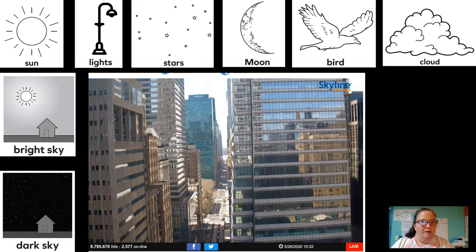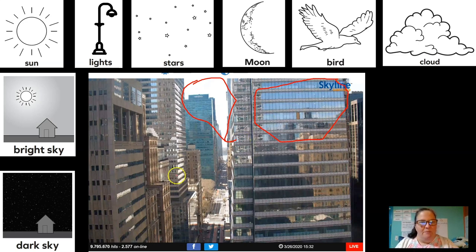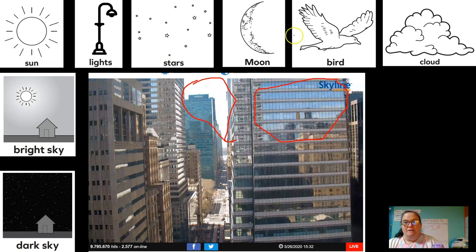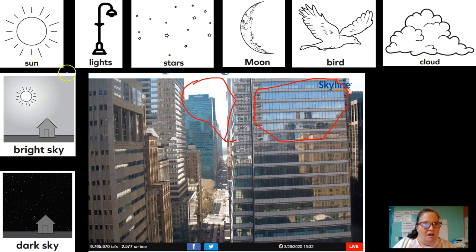Here we are back in New York. I liked this picture because even though we can't see much of the sky directly, you can still see a bunch of the sky as a reflection in the building. Do you guys see the sky in the building? I thought that was really kind of neat. Which one of these things do we see in the sky of New York? I don't see any clouds, birds, moon, stars, lights, or the sun — but I can tell that it's a bright sky.